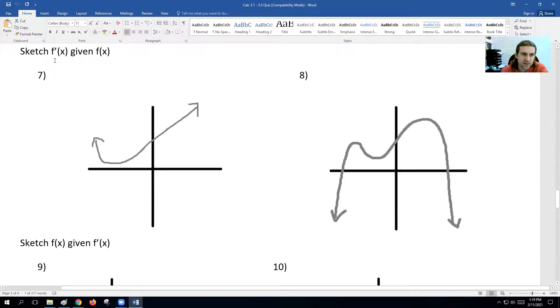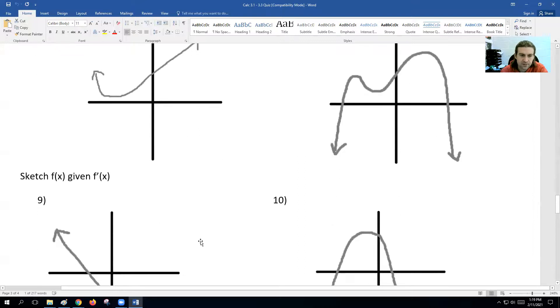Next, this is sketch the derivative given f(x). You want to go through and sketch the derivative. You can see this graph is going down, then up. So the line should be below, then above.